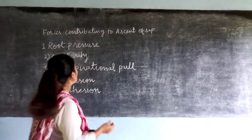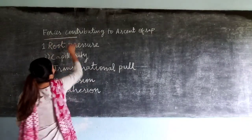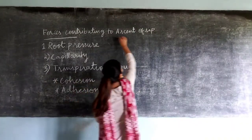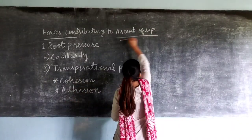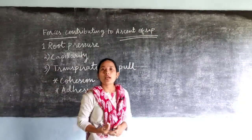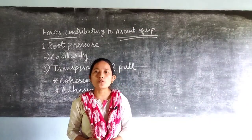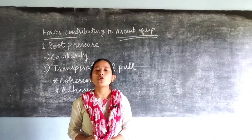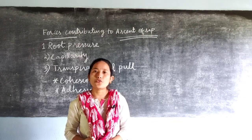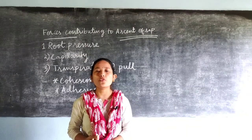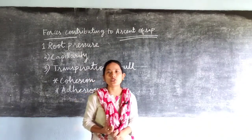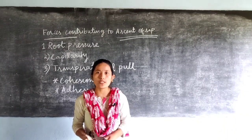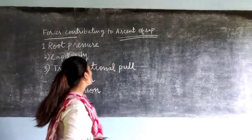Today we will be discussing the forces which are contributing towards the ascent of sap. Ascent of sap means the upward movement of the sap. So what are the different forces which help in the upward movement of the sap from the root to the other parts of the plant?